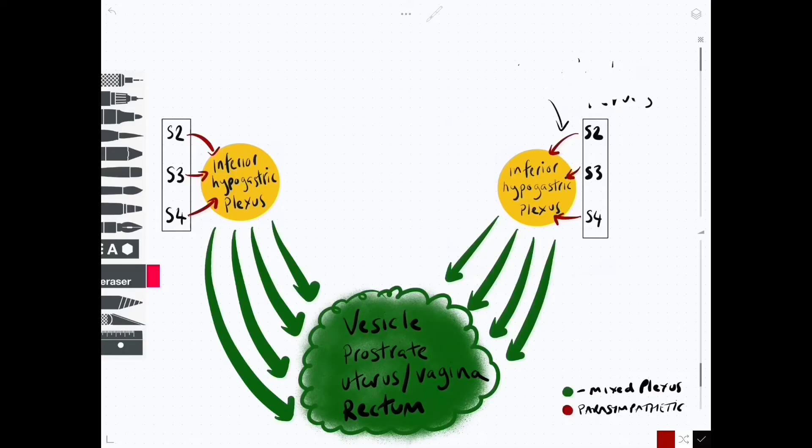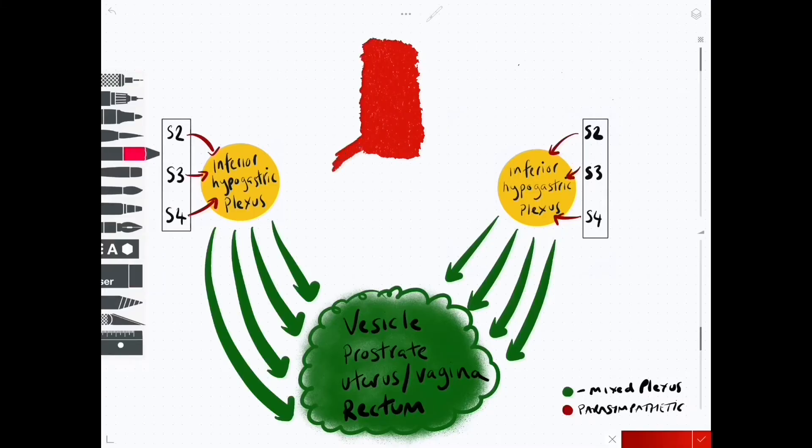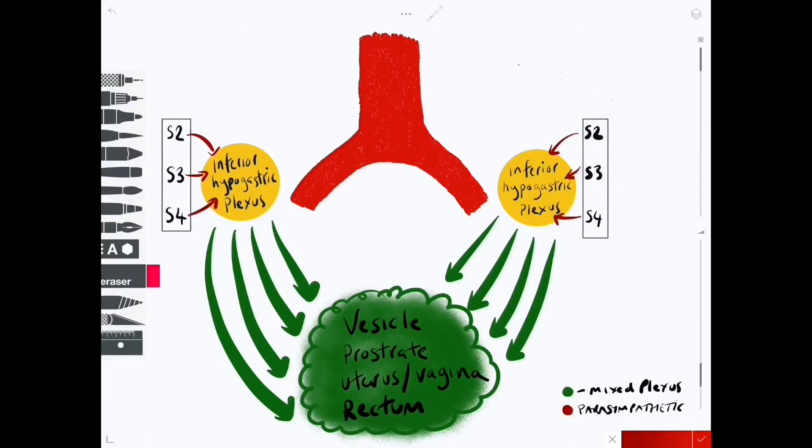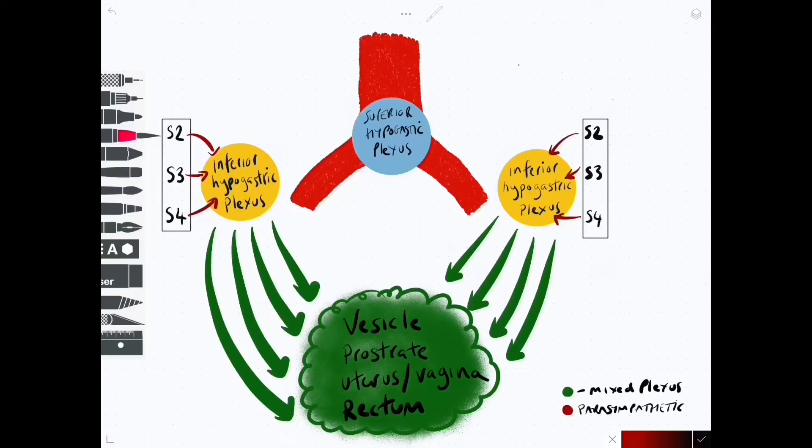We now need to draw on some additional structures to figure out exactly where the sympathetic contributions will arise. So we're going to draw on the bifurcation of the aorta and we are going to represent the superior hypogastric plexus as a blue circle. The superior hypogastric plexus sits around the level of L5, around the level of the sacral promontory, and it will feed into the inferior hypogastric plexus via two nerves, a left and a right hypogastric nerve.